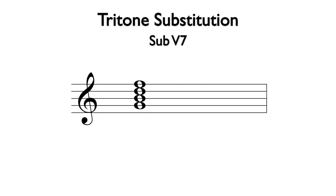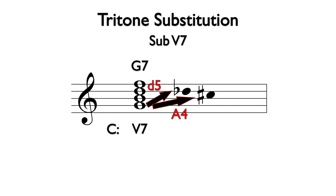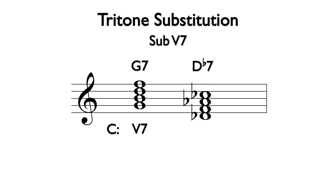For example, the primary dominant seventh chord in the key of C is G7. The note a tritone away — either a diminished fifth or an augmented fourth — is Db or C-sharp. A dominant seventh chord based on Db is Db7, and the notes are Db, F, Ab, and Cb.